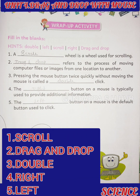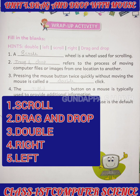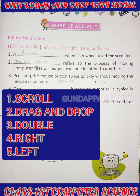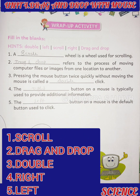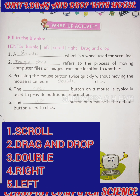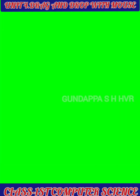Fourth question: the blank button on a mouse is the default button used to click — the answer is the left button. The left button is the default button we use most of the time. I hope you understood this lesson. If you have any queries related to this lesson, please comment. Also please like, share, comment, and subscribe to our channel. Thank you for watching — keep watching videos related to class one to eight computer science. Thank you once again.